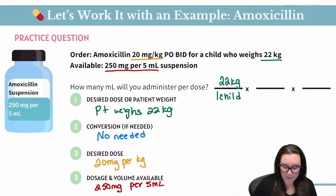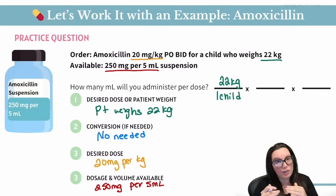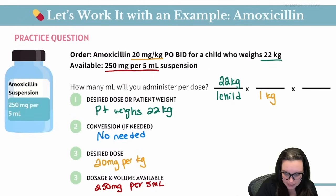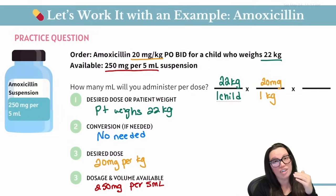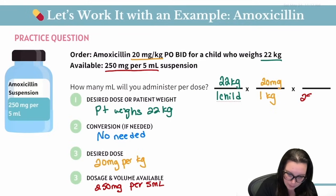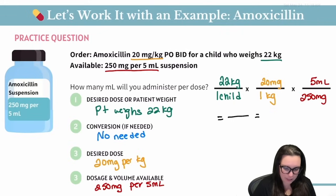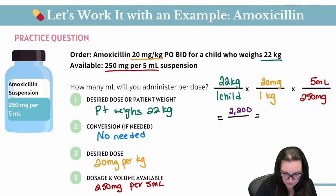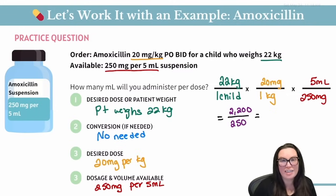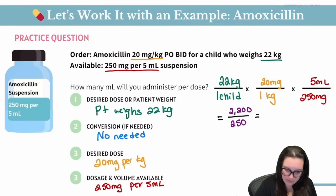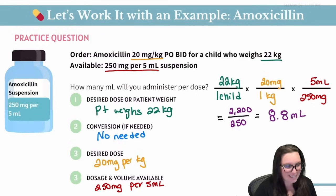Now it's plug and play. Our first fraction: 22 kilograms for one child. We skip the conversion. For the desired dose, we line up like units — one kilogram on the bottom, 20 milligrams on the top. For our final fraction, milligrams on the bottom and volume on top. Multiplying top: 22 times 20 times 5 equals 2200. Bottom: 1 times 1 times 250 equals 250. Dividing 2200 by 250 gives our correct answer of 8.8 mls.